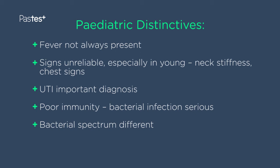Children with a urinary tract infection can be under serious risk because it can ascend and cause kidney damage, and it's difficult to diagnose because symptoms may be very non-specific. Children also have poor immunity, so bacterial infection can quite often supervene and be very serious. The spectrum of bacteria, particularly in the neonate, is quite different to those later in life.